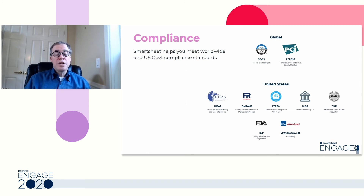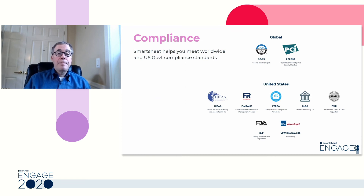I'd like to call out a special version of Smartsheet called Smartsheet.gov. Smartsheet.gov is an instance of Smartsheet that has passed the rigorous tests of the General Services Administration for use in U.S. federal government agencies. This product is intended for federal government agencies as well as companies that do business with the United States federal government. We are FedRAMP authorized at the moderate level. We also have IL-2 from DISA, which is the Department of Defense — so FedRAMP moderate and DISA Department of Defense level two. If you have questions about which version of Smartsheet to purchase, please contact your account team. And for GDPR and CCPA around privacy, please contact your account team and we'll help you meet those requirements as well.